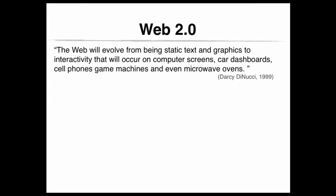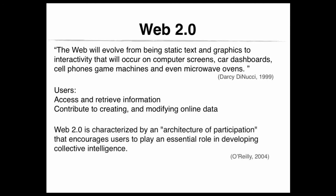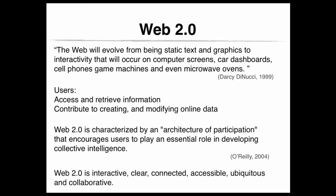When you talk about Web 2.0, the first concept that comes to mind is collaboration. Whether using social networking sites, blogs, wikis, video sharing sites, web applications, instant messaging, mashups, or folksonomies including tagging and social bookmarking, users not only can access and receive information but can also contribute to creating and modifying online data. Web 2.0 is characterized by an architecture of participation that encourages users to play an essential role in developing collective intelligence.